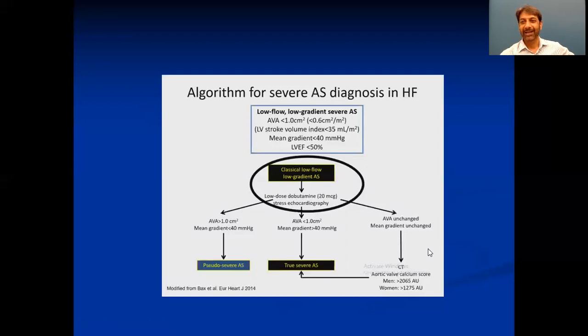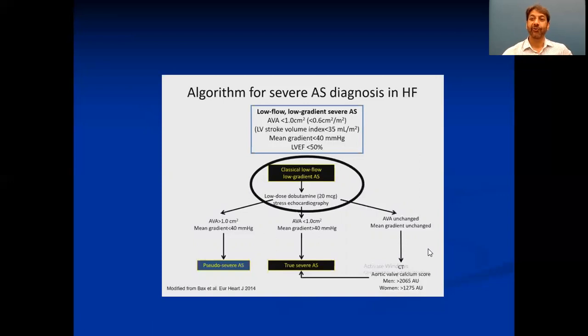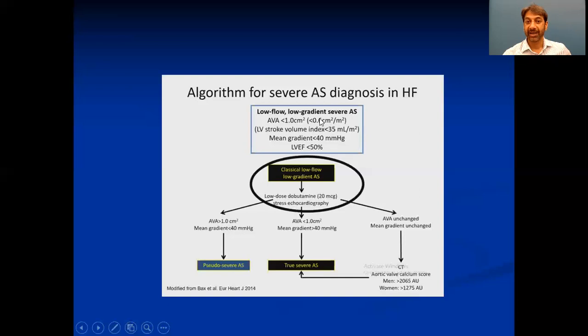That covers the area of low flow, low gradient AS — very important for examination as well as patient decision-making. Whenever you see a patient with severe AS and decreased LV function, look at the area, look at the gradient, and decide. If the gradient is low and aortic valve area is low, you need further workup. But if gradients are high even with LV dysfunction, the patient has adequate contractile reserve. I hope that clarifies low flow, low gradient AS and helps you manage your patients.